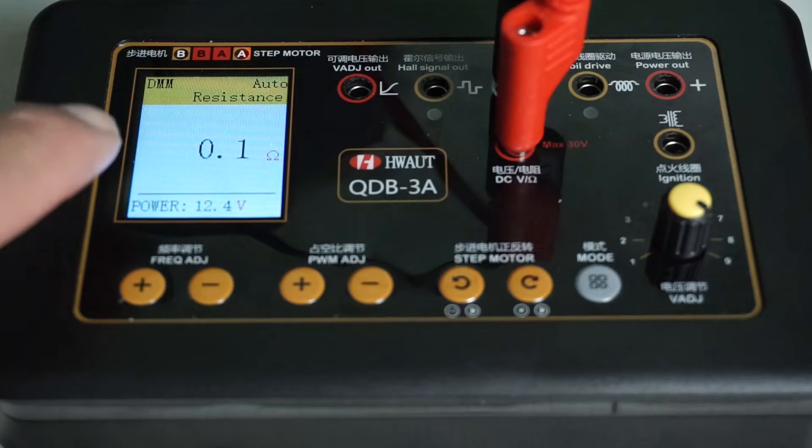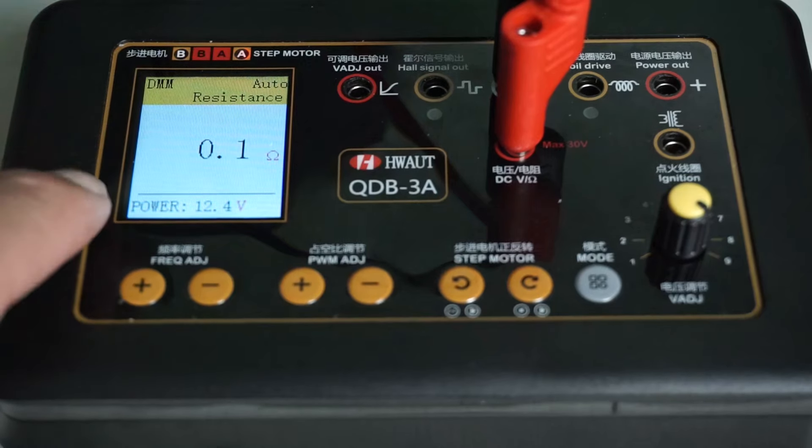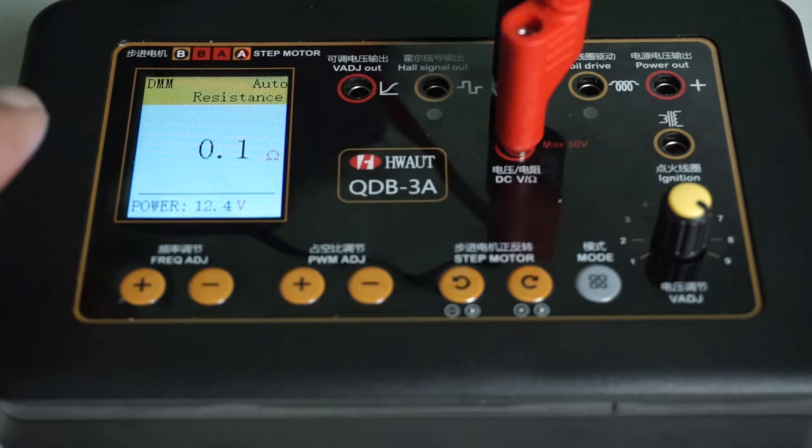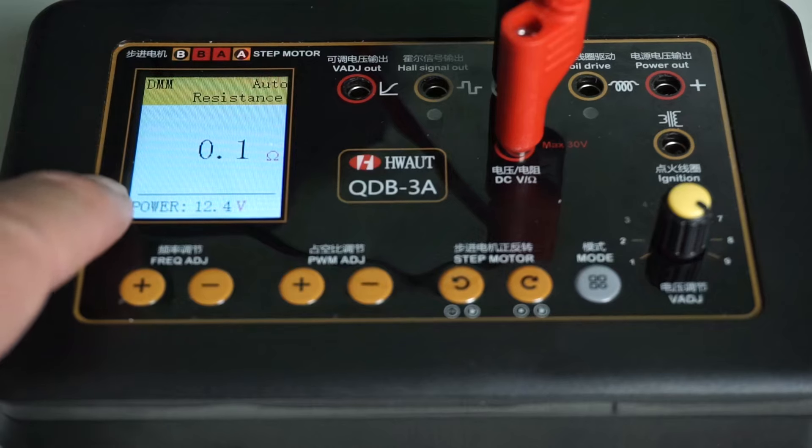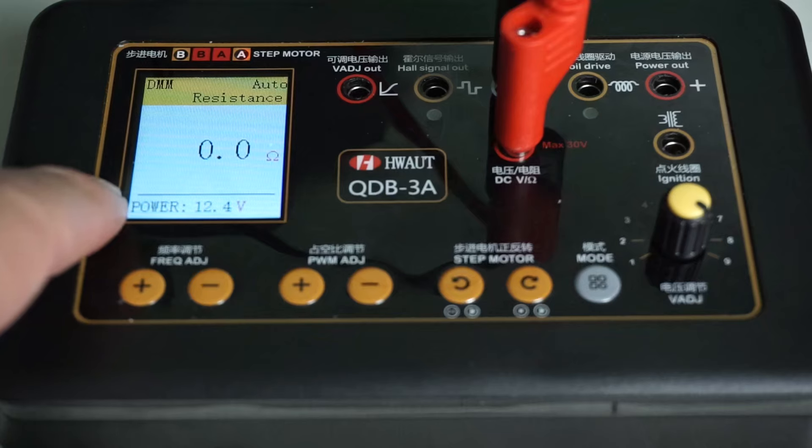The first screen on power up is what they loosely refer to as multimeter mode and I say loosely because there's no ammeter function to this. And the voltmeter is 0 to 30 volts DC, positive only, no reverse polarity. And it does measure ohms.